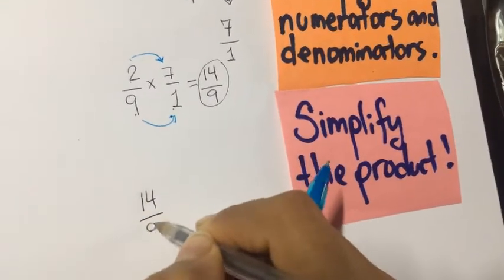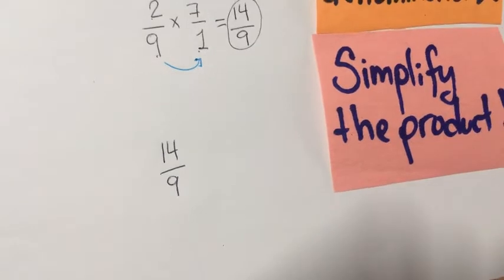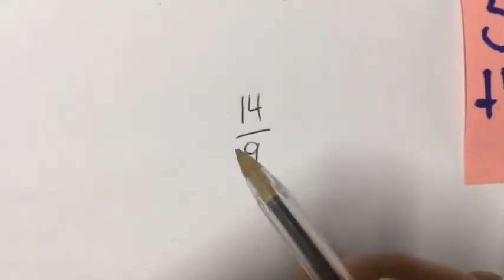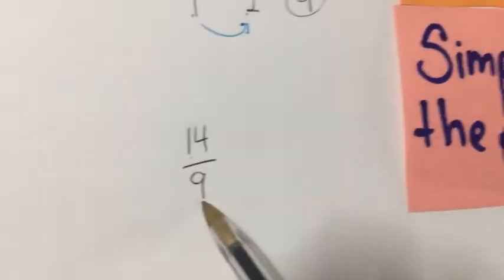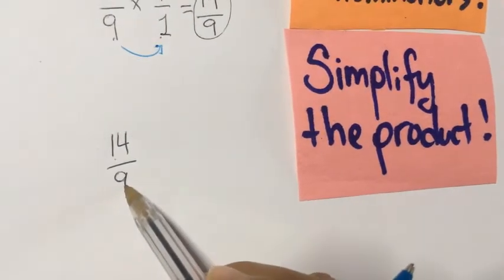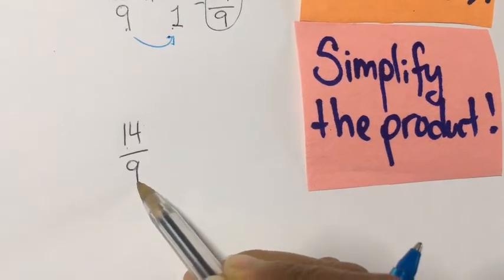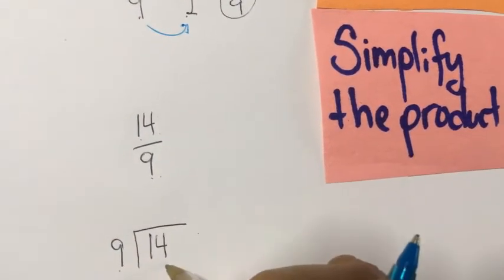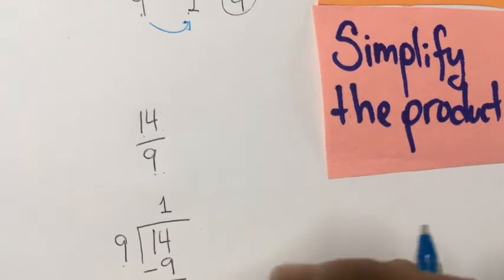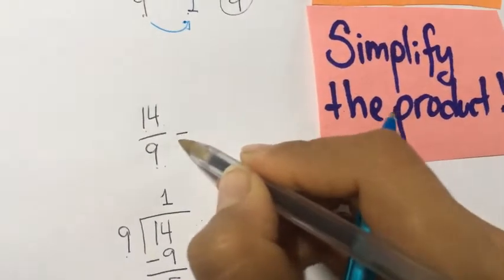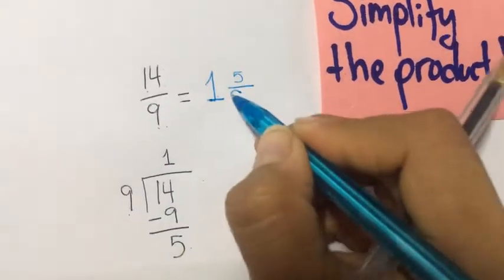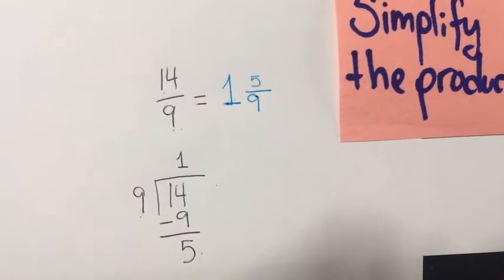We have an improper fraction. We check if 14 and 9 are in the same table — they are not, so we cannot simplify by a common factor. We need to divide because it's an improper fraction. 14 divided by 9: 9 goes in once, remainder is 5. The answer is 1 and 5/9, where the quotient is the whole number and the remainder goes over the divisor.